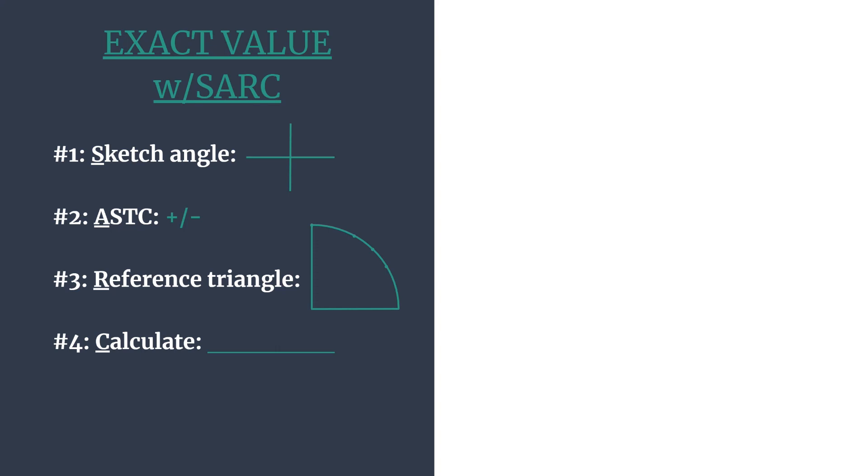A quick breakdown: S stands for sketch the angle, so you'll sketch the angle's terminal side so you know which quadrant your angle is in. The A stands for ASTC, another acronym that helps you know which trig functions are positive in each of the quadrants.